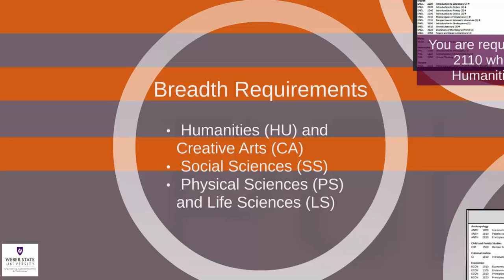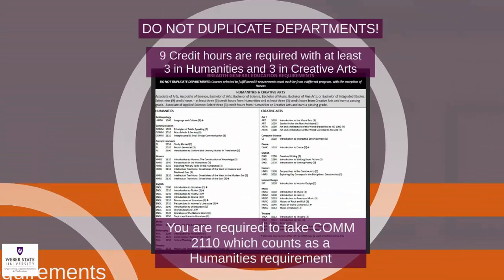For electrical engineering students, major courses require a C or better. We will begin by discussing the Humanities and Creative Arts requirement found on page 2 of the General Education requirement sheet. In this area, you must complete a total of 9 credits with at least 3 credits in Humanities and 3 credits in Creative Arts. Your last 3 credits can come from either the Humanities or Creative Arts column, as long as you don't duplicate departments. You will choose one course from the Humanities, one course from the Creative Arts, and one from either side.